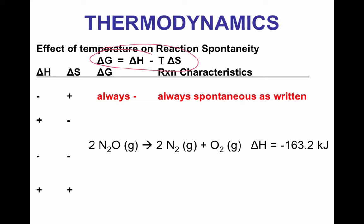We're going to start with the first scenario, which is enthalpy or delta H being negative and entropy or delta S being positive. If the reaction is exothermic and the change in entropy is positive, then delta G is negative at all temperatures. Looking at the equation, delta H is negative and we have minus T delta S. If entropy is positive, we have a negative value minus a positive — so a negative becomes more negative. That is why delta G is always negative.